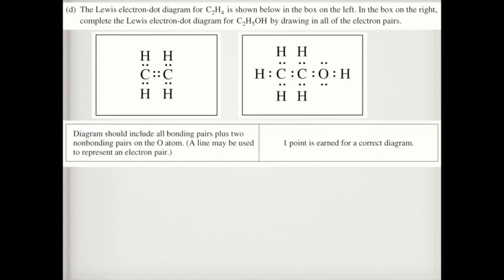The Lewis electron diagram for C2H4 is shown below on the left. In the box on the right, complete the Lewis electron diagram for C2H5OH by drawing in all electron pairs. For C2H5OH, I have two carbons bound to each other with five hydrogens—three on one carbon, two on the other. Because it says C2H5OH, that OH is hanging off the side. The oxygen has two lone pairs of electrons, no need for double bonding. The diagrams should include all bonding pairs plus two non-bonding on oxygen.